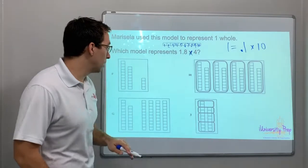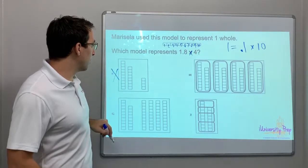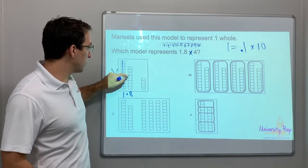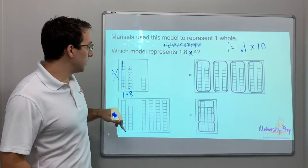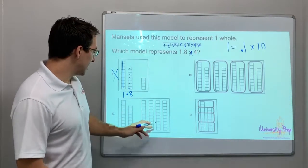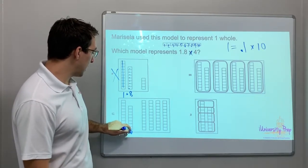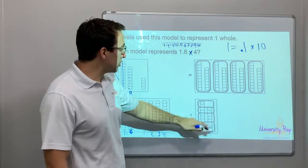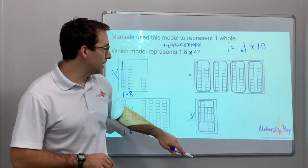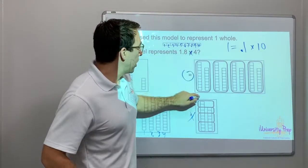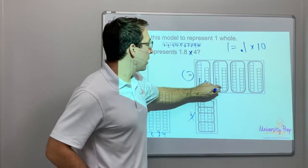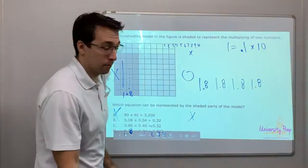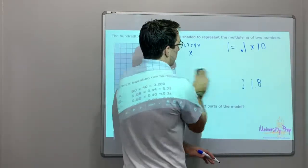We're going to multiply times four. This is one, and this is 0.8 — one, two, three, four, five, six, seven, eight — and then times four. One point eight, one point eight, one point eight, one point eight — times four is right there. That's our answer.